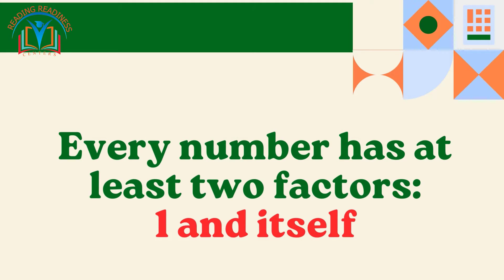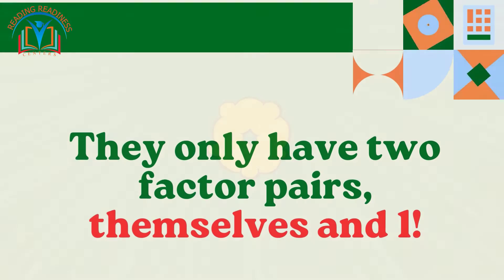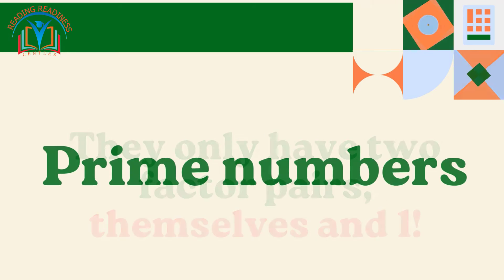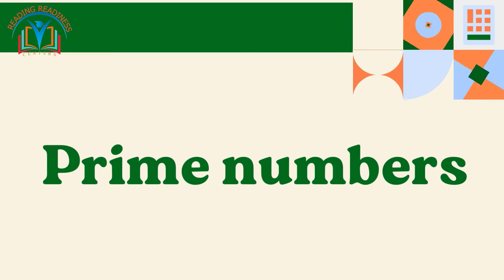Every number has at least two factors, one and itself. But some numbers like 2, 3, 5, and 7 are special. They only have two factor pairs, themselves and one. We call them prime numbers, the sneaky ninjas of the number world.